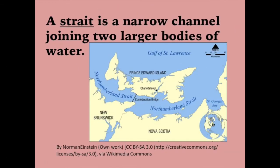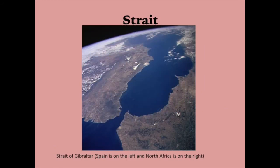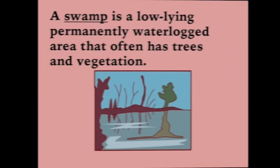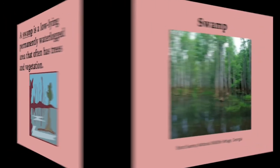A strait is a narrow channel joining two larger bodies of water. A swamp is a low-lying, permanently waterlogged area that often has trees and vegetation.